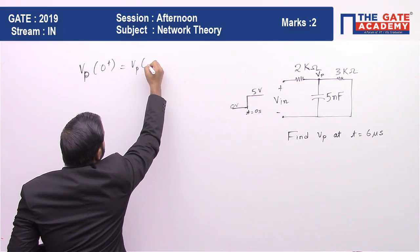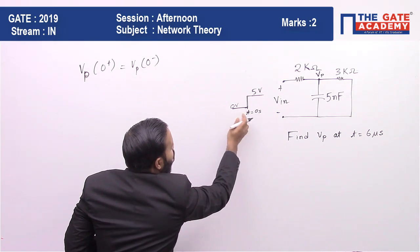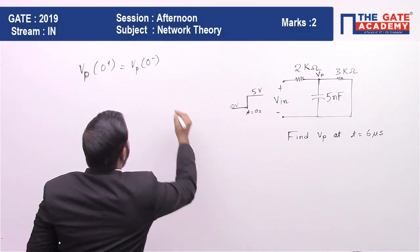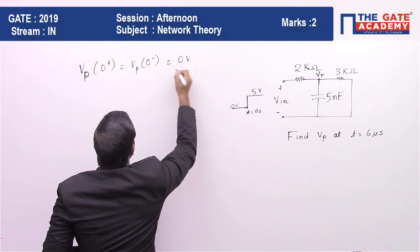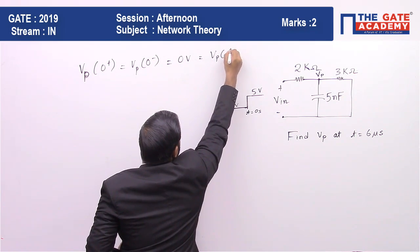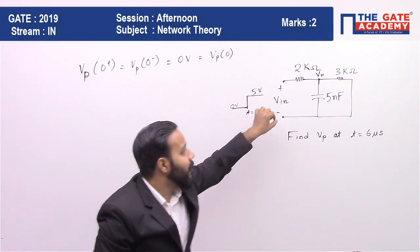So vp(0+) equals vp(0-), meaning the voltage across the capacitor at this time was 0 volt. So vp(0) equals 0.